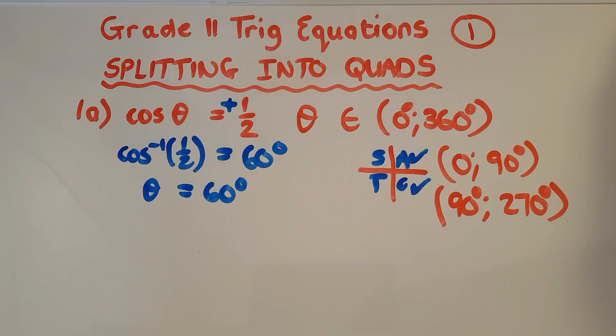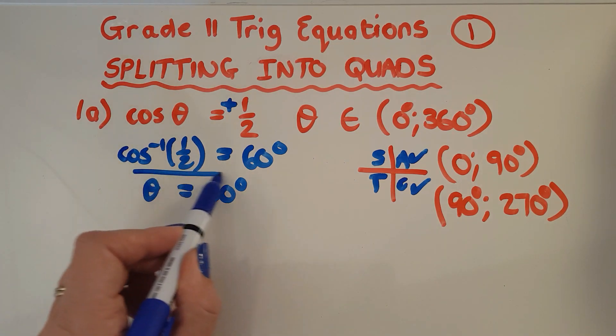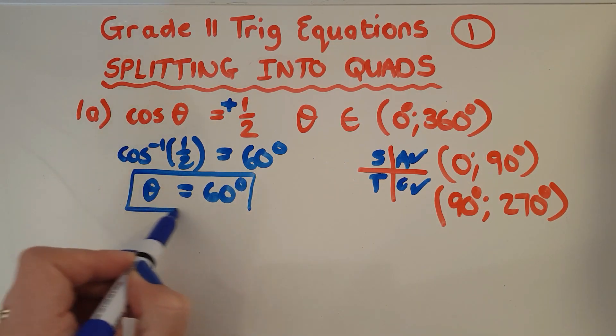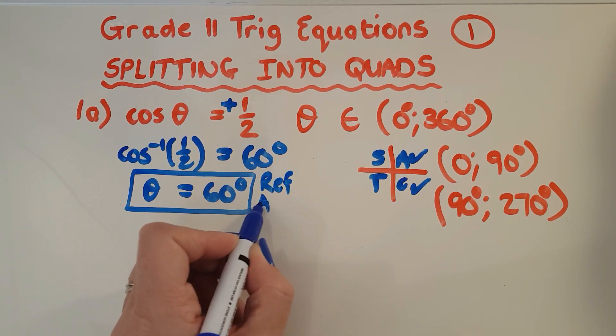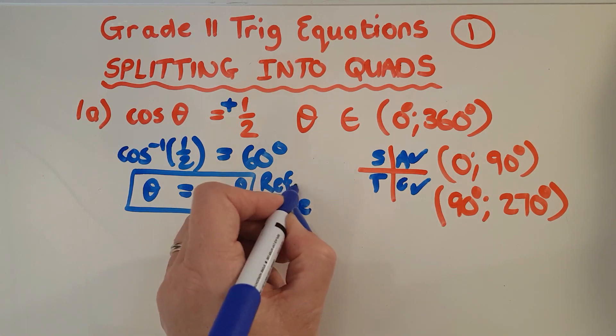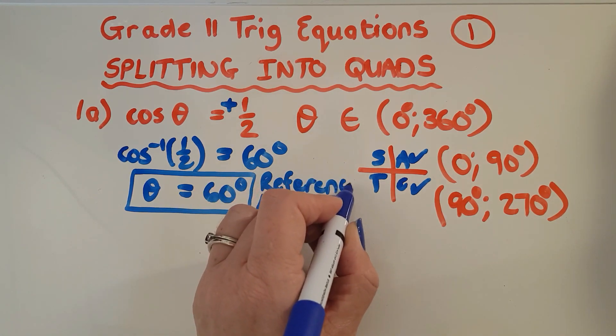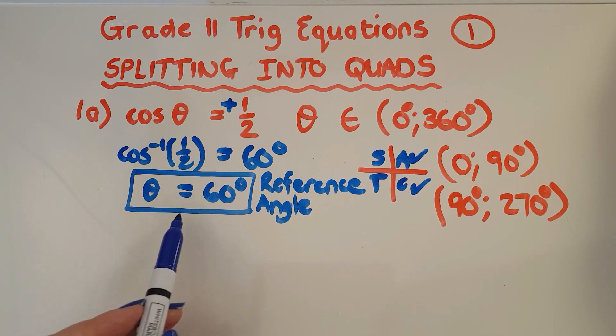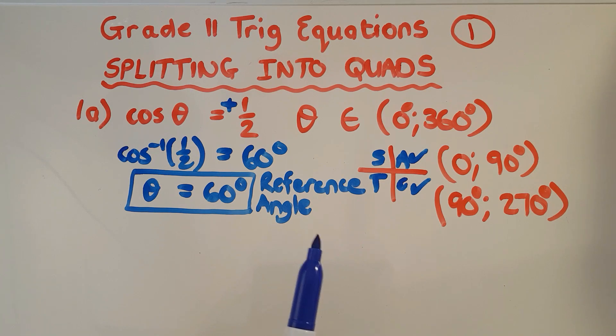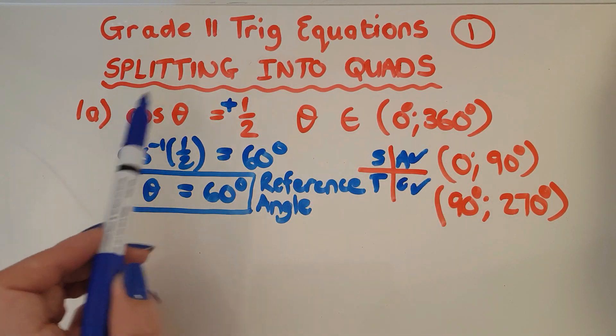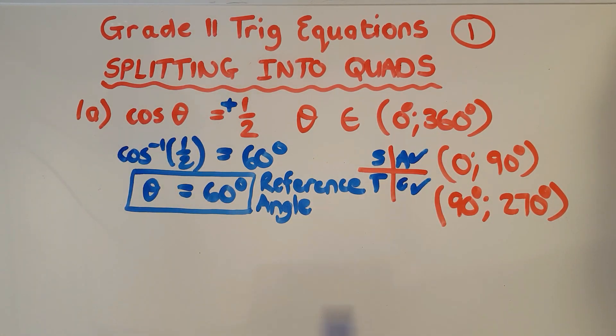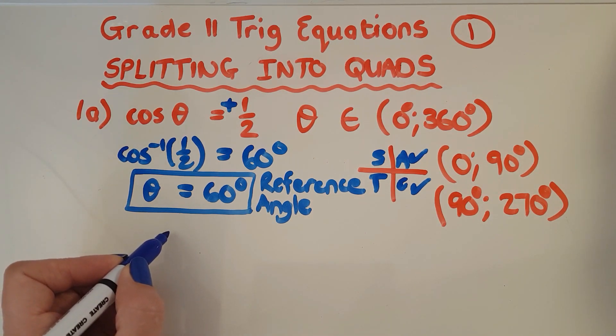And that works just fine because now my theta is 60 degrees. And so in grade 10, that's as far as we would go. But now I'm going to say, draw a box around this thing and know that this is your reference angle. That means that if it's in quad one, that's your answer. Now our example here does include quad one, also quad four. So clearly 60 is the answer for the quad one version, because cos is positive.